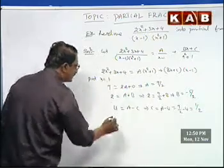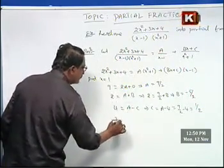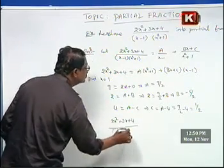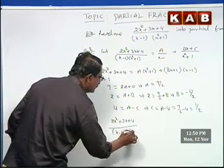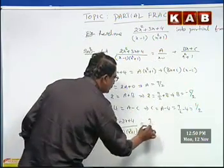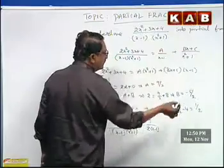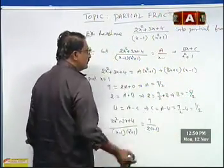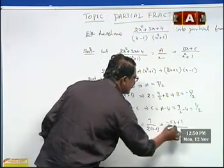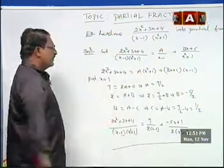Therefore the required partial fractions of the given proper fraction 2x square plus 3x plus 4 by x minus 1 into x square plus 1 equals to 9 by 2 into x minus 1 plus minus 5x plus 1 by 2 into x square plus 1. These are the required partial fractions.